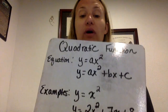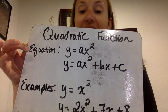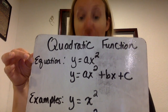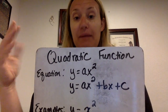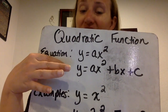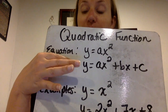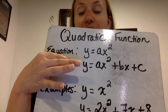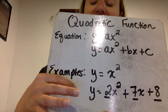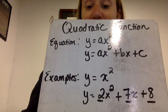So here are some basics on a quadratic function. Your equation can be as simple as y equals ax squared — for example, y equals x squared. That would be a monomial, just one term, but you're still taking it to the second power. The more general form you're going to see, kind of like slope-intercept form, is the standard form: y equals ax squared plus bx plus c. a, b, and c are just numbers. For example, y equals 2x squared plus 7x plus 8 — a would be 2, b would be 7, and c would be 8.